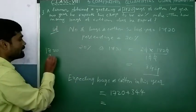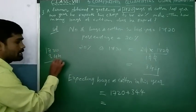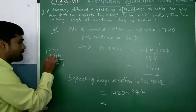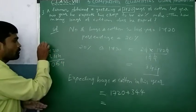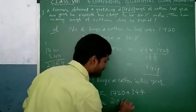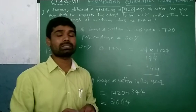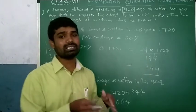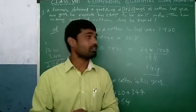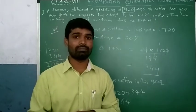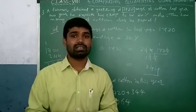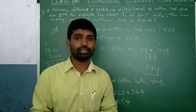Adding 1720 and 344: 0 plus 4 is 4, 2 plus 4 is 6, 7 plus 3 is 10 (carry 1), and 1 plus 1 is 2. So the total is 2064 bags expected this year. This is the important problem which is very important for the exam. Thank you for watching — please subscribe to my channel and share it with your friends.